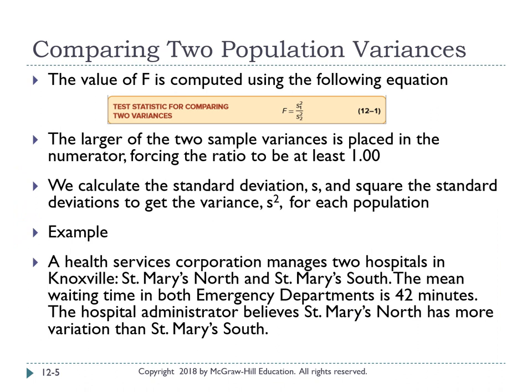The first function of ANOVA is to compare two population variances. The formula to compute F is: F equals the variance in sample 1 divided by the variance in sample 2. We can also write F as the standard deviation squared in sample 1 over the standard deviation squared in sample 2. The top is called the numerator and the bottom the denominator. The larger of the two sample variances is placed in the numerator so the ratio will be at least one.